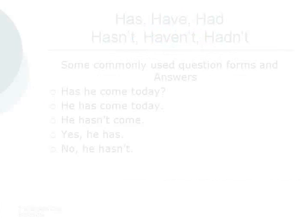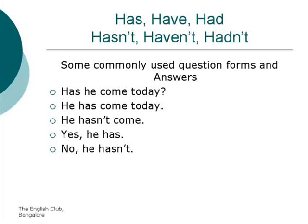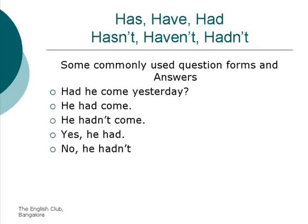Some commonly used question forms and answers. Has he come today? He has come today. He hasn't come. Yes, he has. No, he hasn't. Had he come yesterday? He had come. He hadn't come. Yes, he had. No, he hadn't.